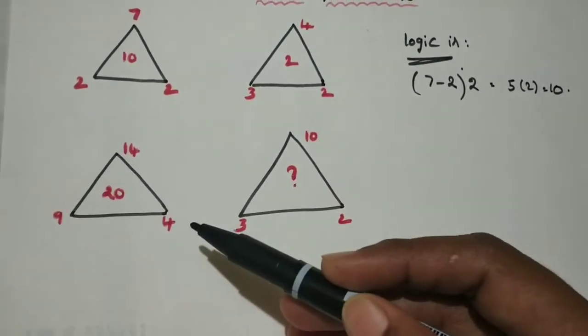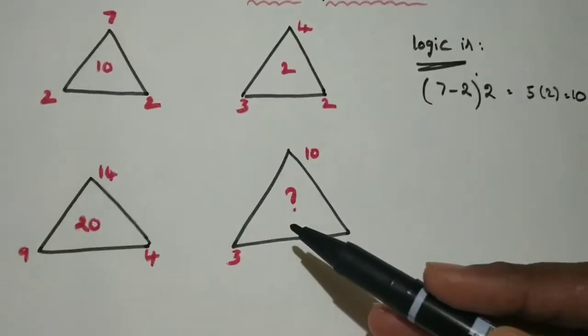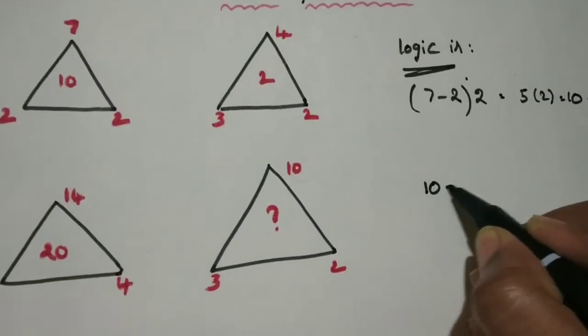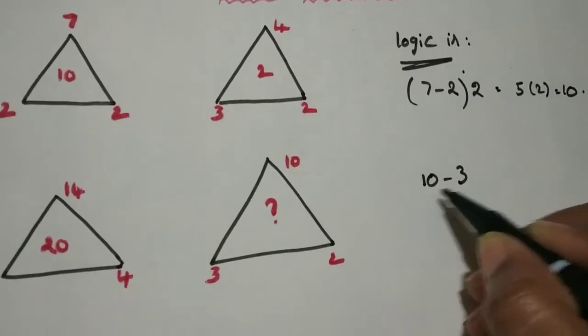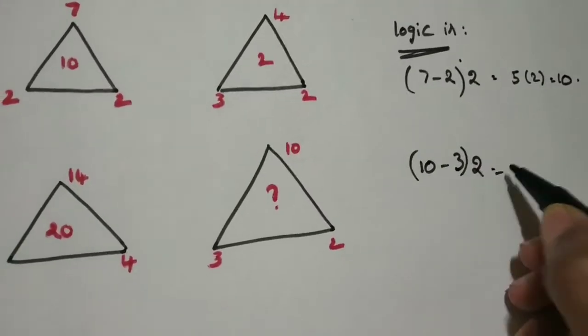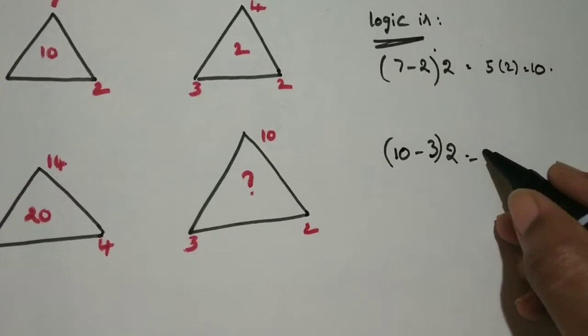5 into 4, the middle number is 20. So what now are we going to find here? 10 minus 3, 10 minus 3 is 7, into 2 (this vertex is 2), so the answer will be 14. 7 into 2 is 14.